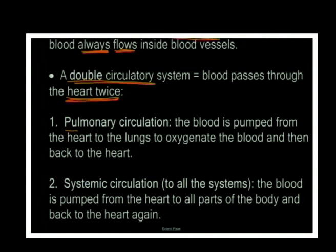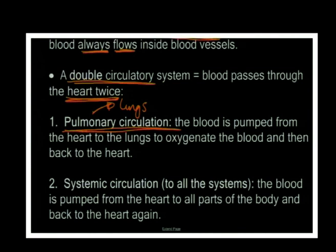We have a double circulatory system because blood passes through the heart twice. The first pass is pulmonary circulation - anything to do with 'pulmonary' means the lungs. Blood is pumped from the heart to the lungs to be oxygenated and then back to the heart. Then we have systemic circulation to all the systems of the body.